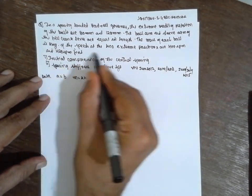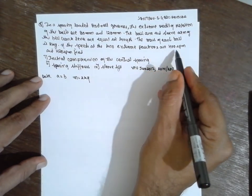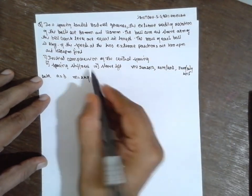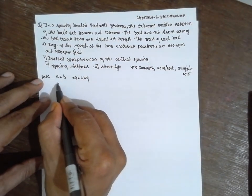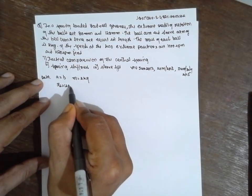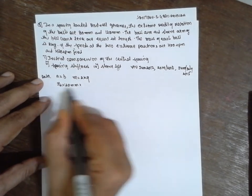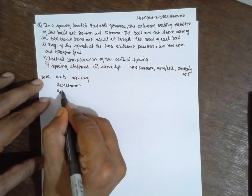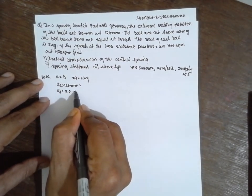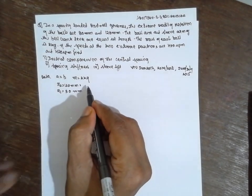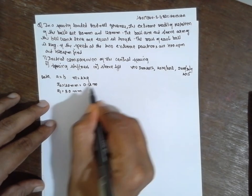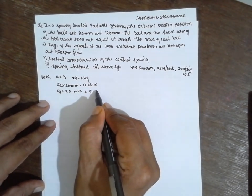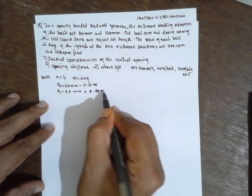If the speed of the two extreme positions are 400 rpm, therefore it will be R1 and R2. 120 mm is nothing but your R2 and this will be your R1. 0.12 meter and 0.08 meter. They are given.